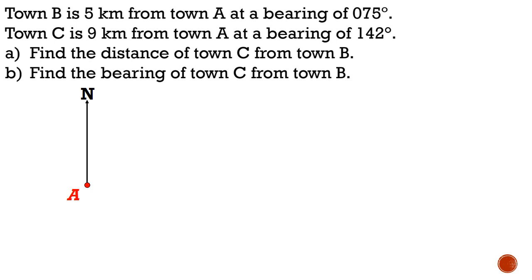Next, we need a diagram to help us visualize this problem. So we begin with town A, and we're given that town B is 5km away at a bearing of 75 degrees, so that's where we mark B. And we know that town C is 142 degrees, which is an additional 67 degrees clockwise from the ray AB, and it is 9km away. So with that, we've constructed triangle ABC.